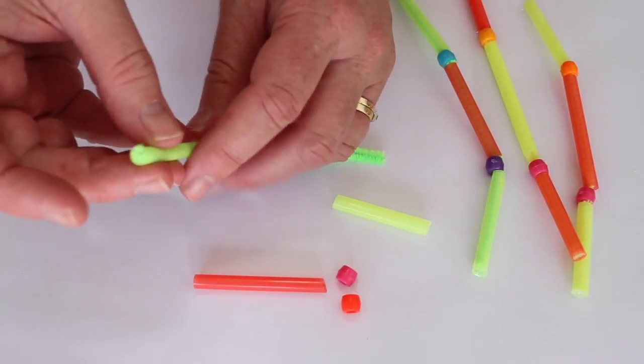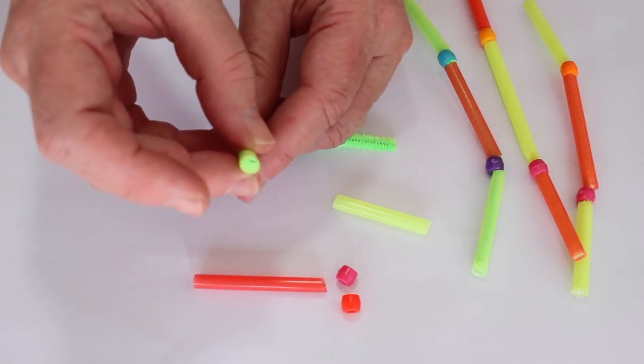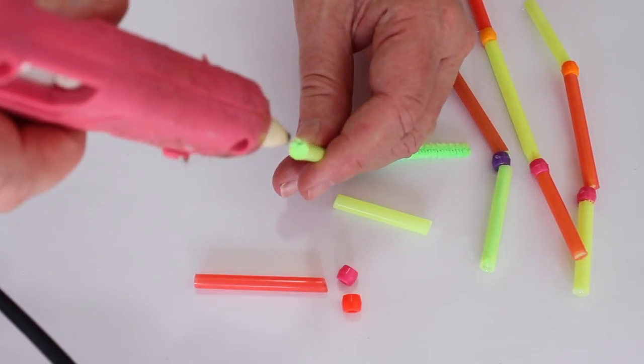Now cut the straws into three pieces. Thread one pipe cleaner through a straw piece. Hot glue the pipe cleaner and the straw together.